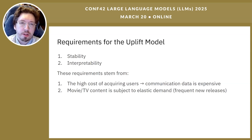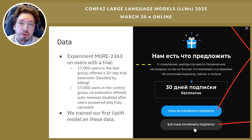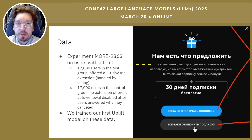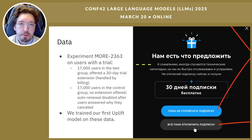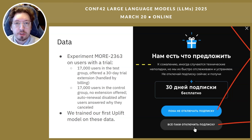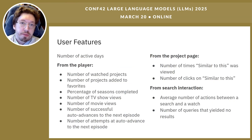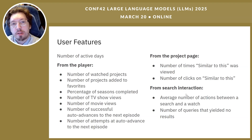In training, we used data from an experiment in which the test group was offered a free 30-day trial extension, while the control group received no offer. A banner was shown on the website so that it couldn't be missed. After the bonus trial period ended, we checked whether users converted to a paid subscription or not. We derived 13 features per user based on how they interact with MoDiTV — the player, the search function, and project pages.